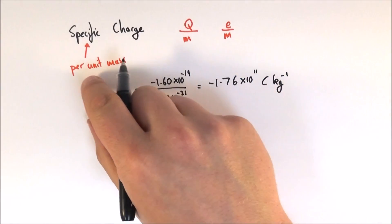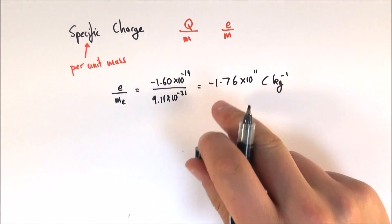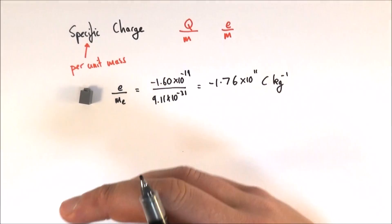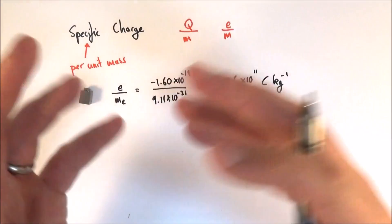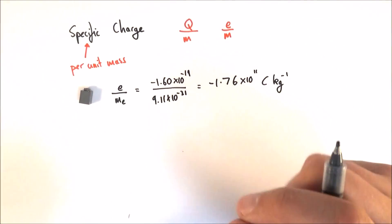So that's our smallest particle, the electron. This is actually something you can measure in the school lab and it's a practical you can do in year 13 using things like a deflection tube to actually look at this stream of cathode rays and actually work out their charge to mass ratio.